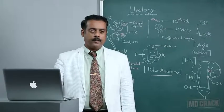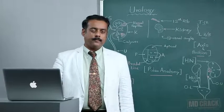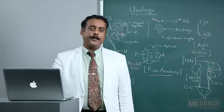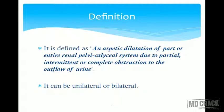Welcome students. Today we are going to discuss one interesting topic: hydronephrosis. By definition, it is defined as an aseptic dilatation of part or entire renal pelvicalyceal system due to partial, intermittent or complete obstruction to the outflow of urine. It can be either a unilateral phenomenon or it can be bilateral.